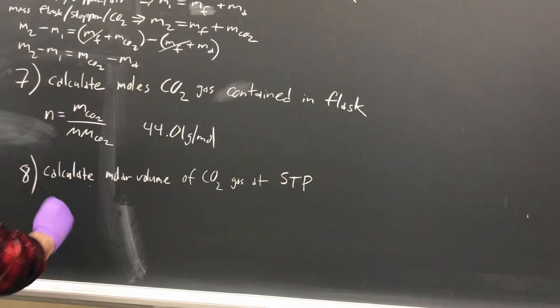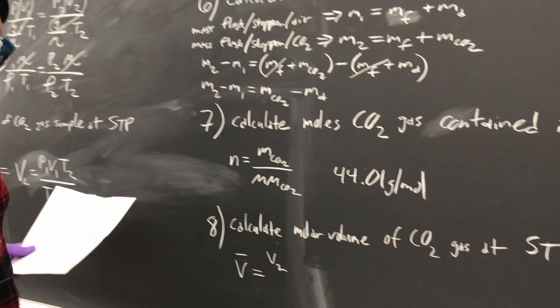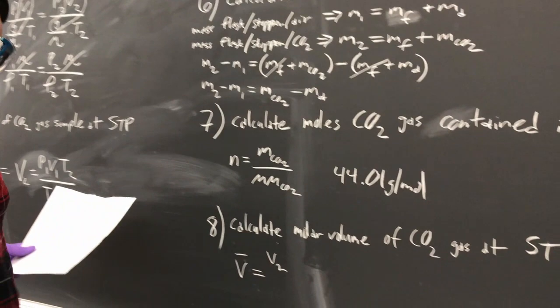And then finally, calculate the molar volume of CO2 gas. So the molar volume is known as V bar. So V bar equals V2 from number 4, V2 over N, which we just calculated here. So it's the volume per mole, or molar volume. And that'll be your final answer.